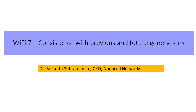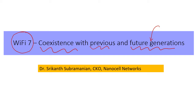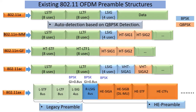Hi, continuing on our Wi-Fi 7 topics, I'd like to give a brief idea of the coexistence measures that Wi-Fi 7 is pursuing at a physical layer level. The interesting thing is that it's not just with the previous generation, but it's also becoming friendly with potentially future generations as well. My name is Srikant, and I am with Nanocell Networks.